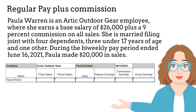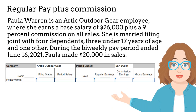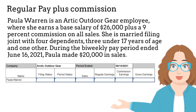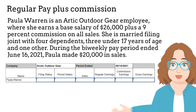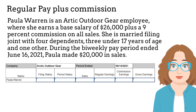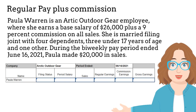Let's now take a look at Paula Warren who works at Arctic Outdoor Gear. She earns a base salary of $26,000 plus a 9% commission on all sales. She is married filing jointly with four dependents — three under 17 years of age and one other. During the bi-weekly pay period ended June 16, 2021, Paula made $20,000 in sales. Let's tackle this problem together.